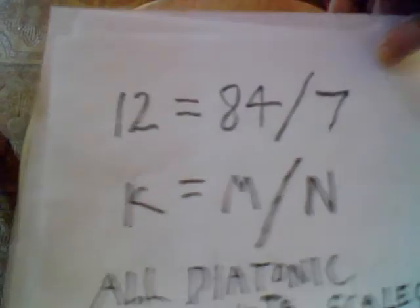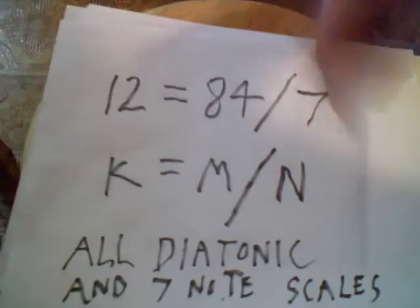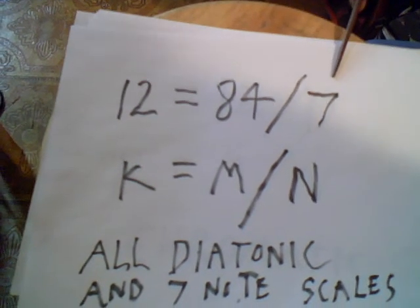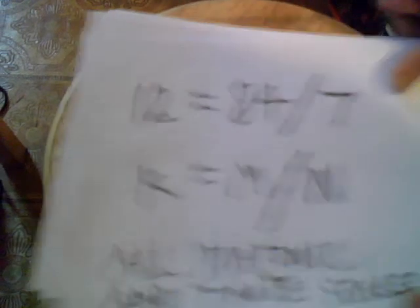Most people like to play in the diatonic scales, so really there's 84 modes, there's 7 notes, and there's 12 keys. So K equals M divided by N all over again.